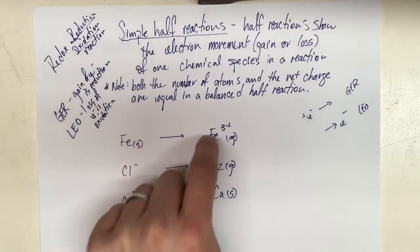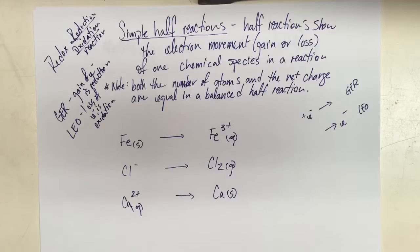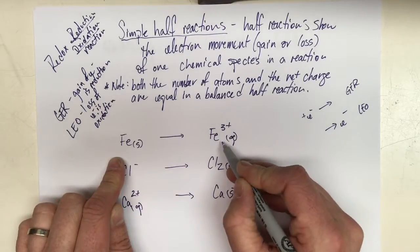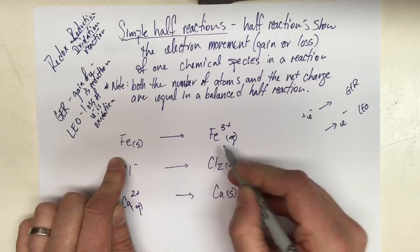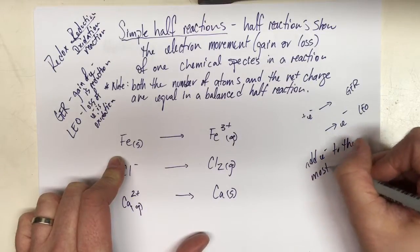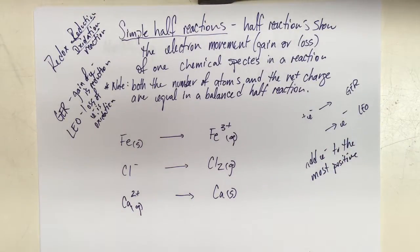Here you can see iron solid becoming iron³⁺ ions. This would not be a complete reaction — it's only half of the reaction. We need to balance both the number of atoms and the charge, because in any balanced half reaction, both the charge and the atoms are balanced. The rule is: add electrons to the most positive side.